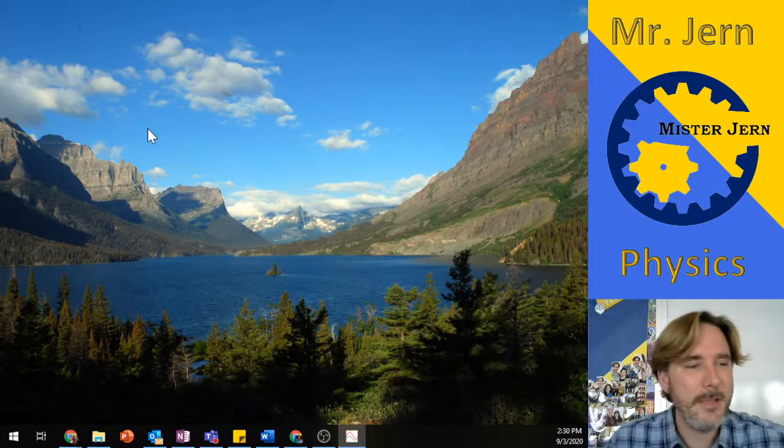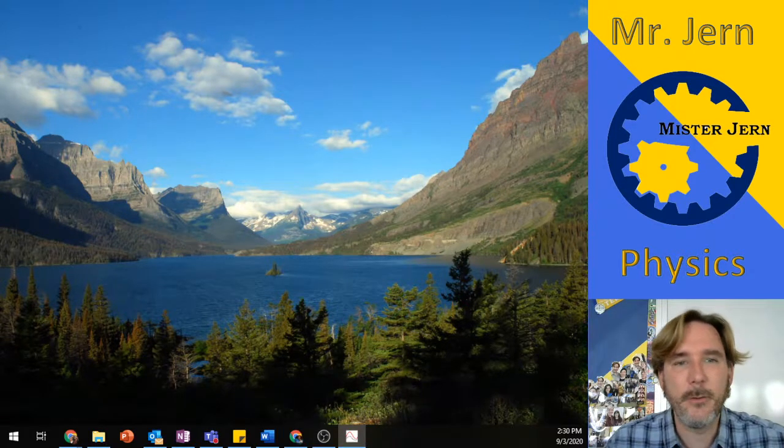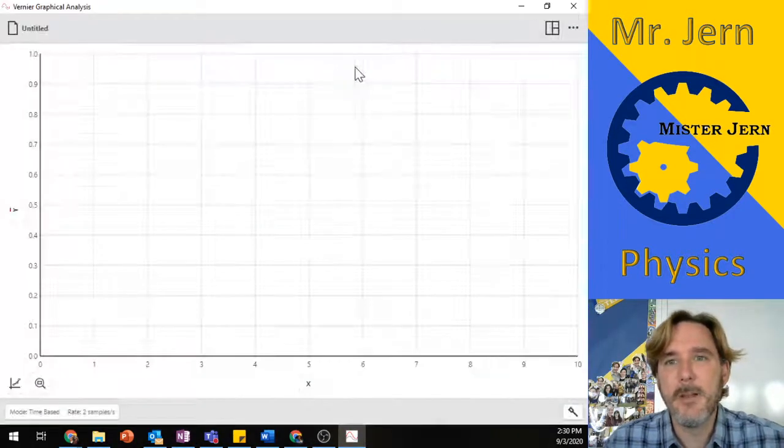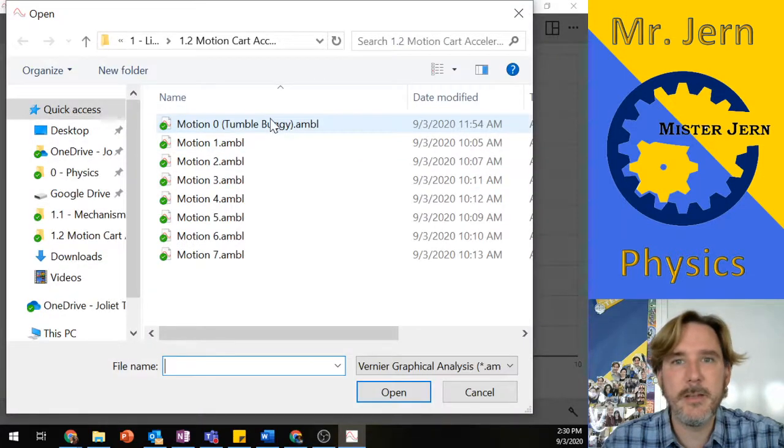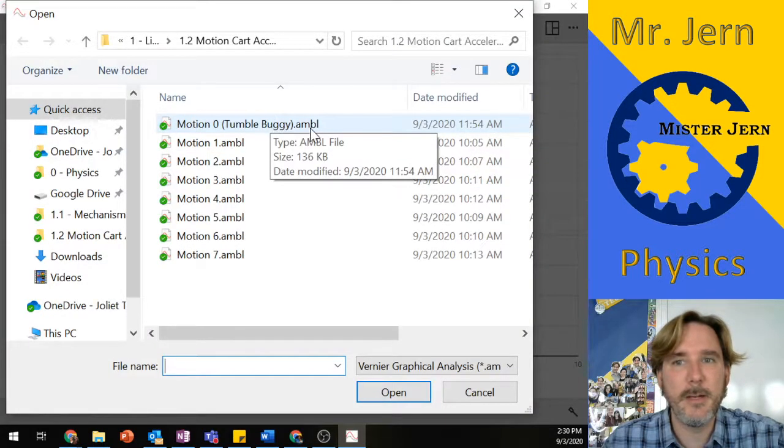I'm going to open that up. Once again, this is if it didn't just open for you clicking the file. When I do that, we don't have any sensors connected because you're at home, so I'm going to choose a file to open. In this case, the Motion Zero, the tumble buggy data.